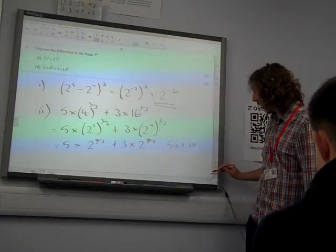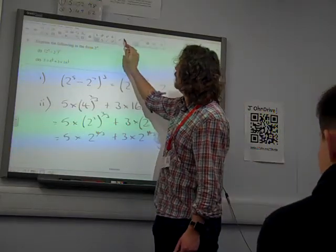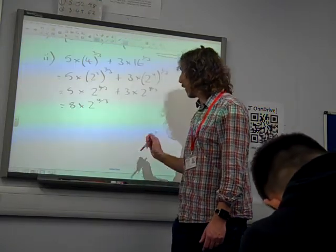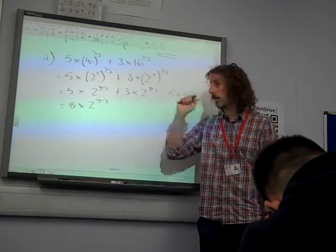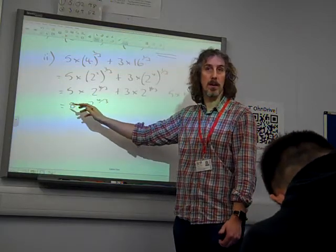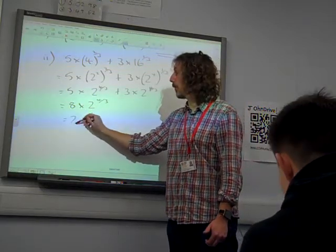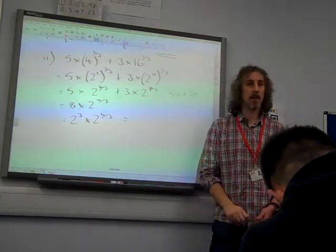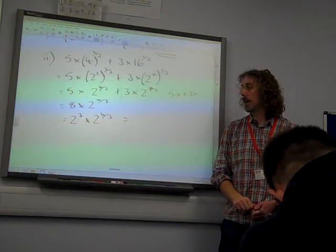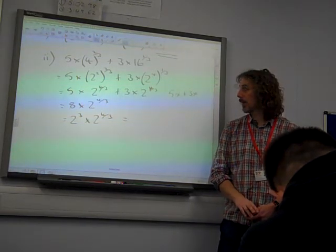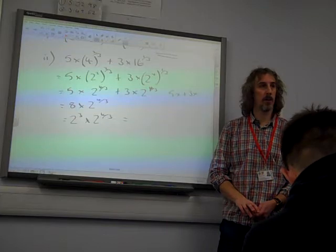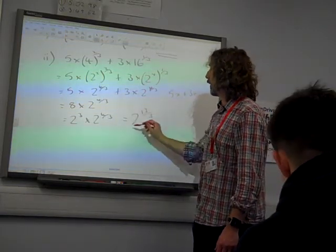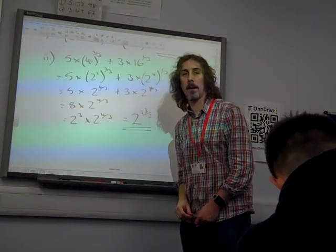So we've got 5 plus 3, that's 8, times 2 to the 4 thirds, which is all very convenient because 8 is also, can be written as a power of 2, 2 cubed times 2 to the 4 thirds. So we're left just adding the powers, 3 plus 4 thirds. Well, 3 is the same as 9 thirds, so 9 thirds plus 4 thirds is 2 to the power of 13 thirds.